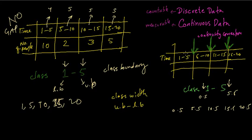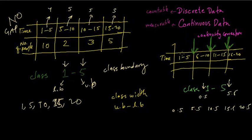The continuity correction adds 0.5 to the upper boundary and subtracts 0.5 from the lower boundary, but they end up at the same space — for example, 5 plus 0.5 is 5.5, and 6 minus 0.5 is also 5.5. So you only need to subtract 0.5 from the first class boundary; everything else, just add 0.5.